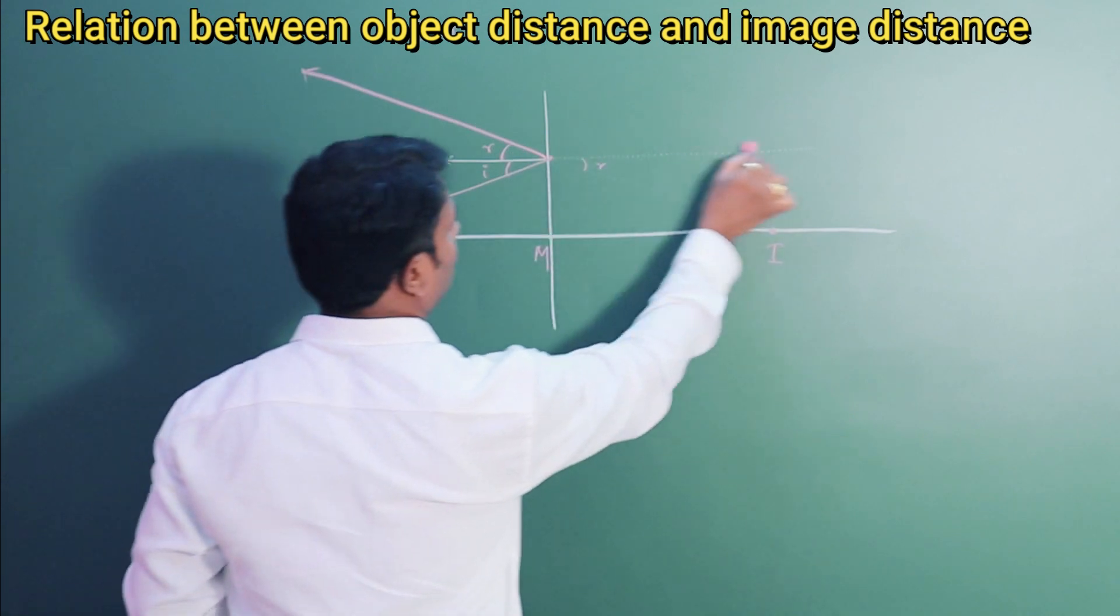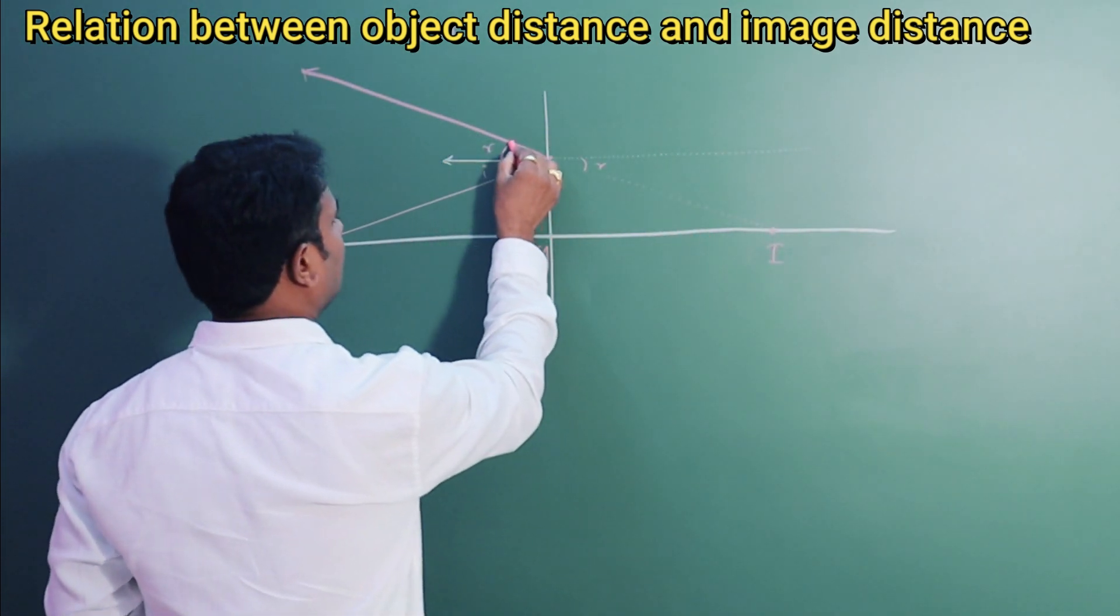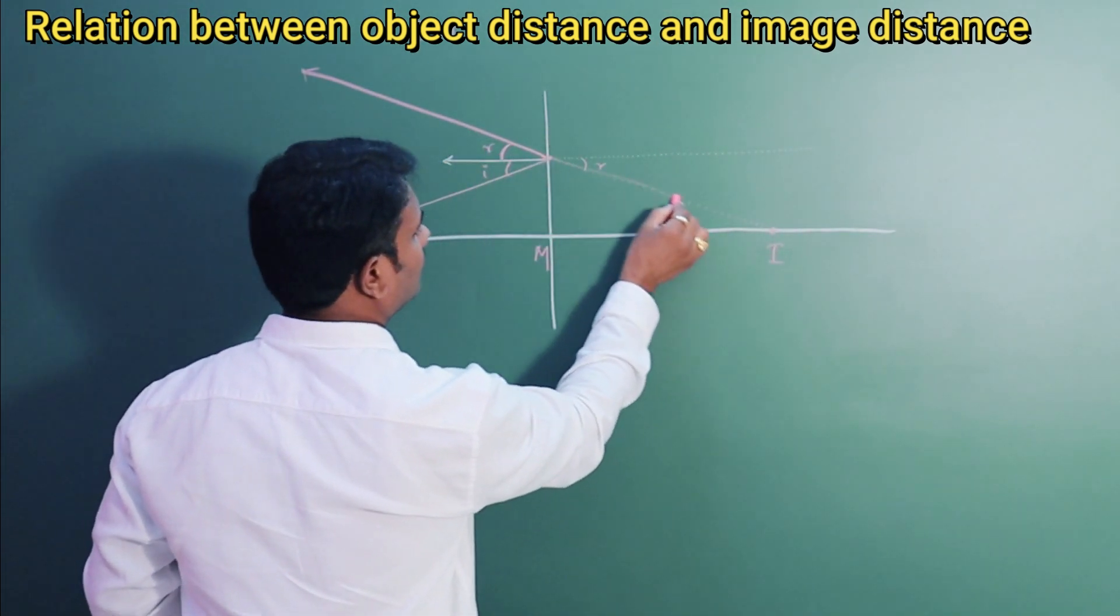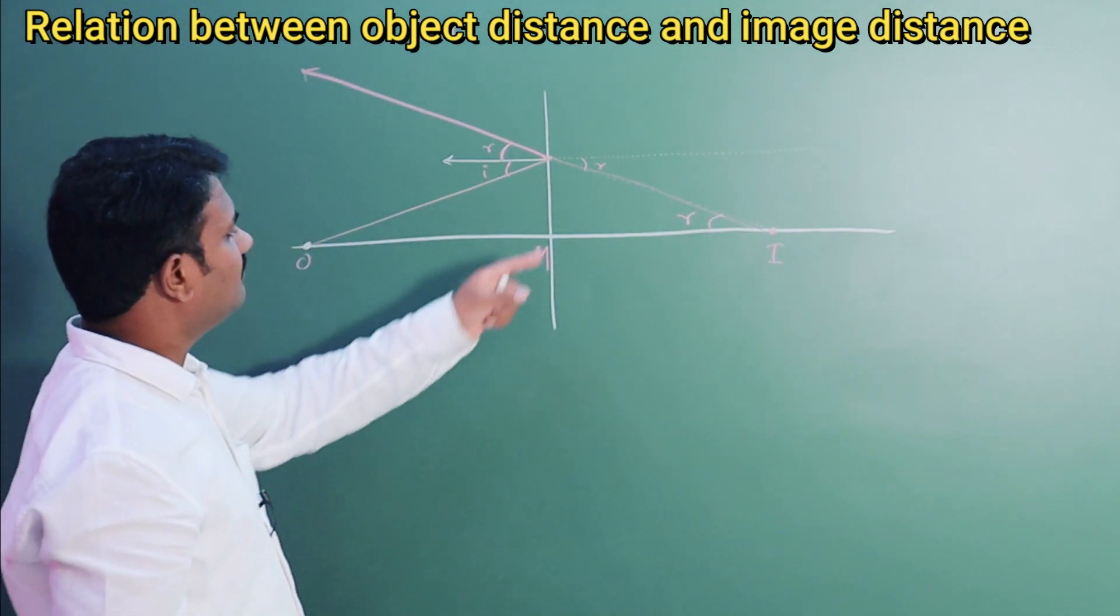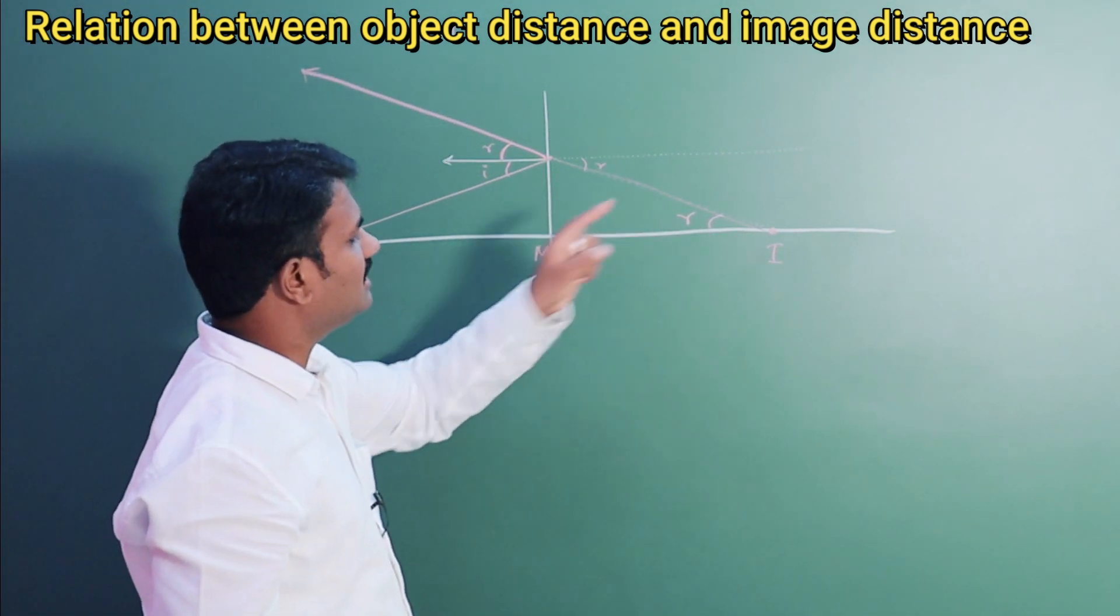And one more thing. As these two are parallel lines, if the angle is R here, here also the angle will be R. And also, with the alternate angles, you can say if this is R, this is also R.